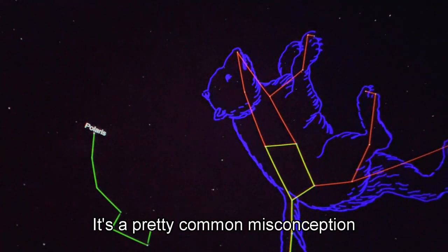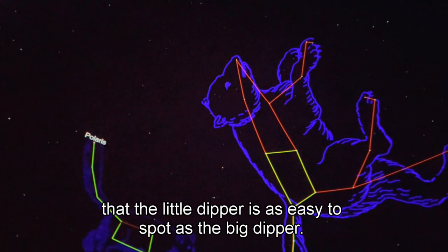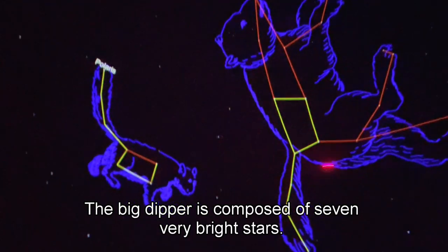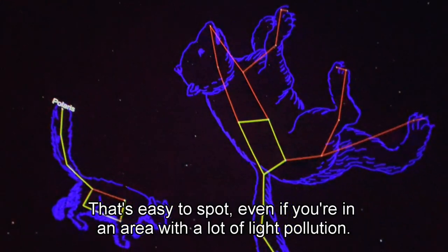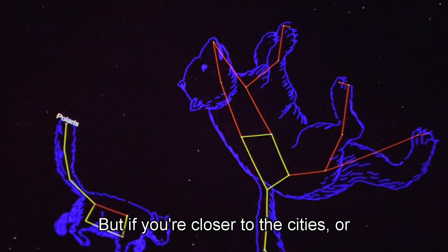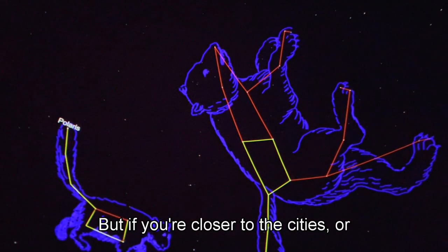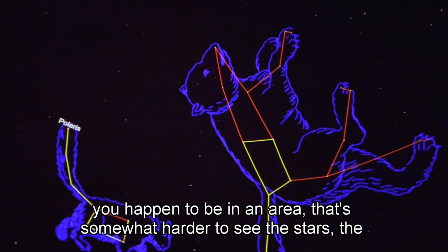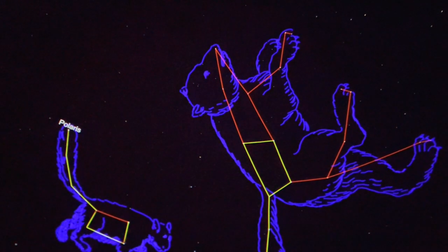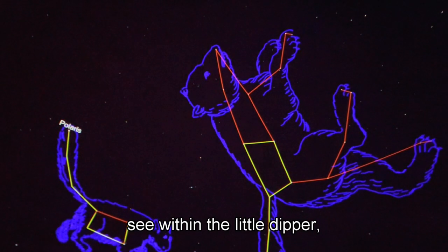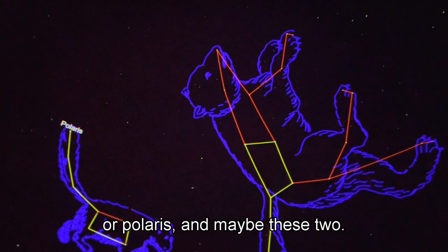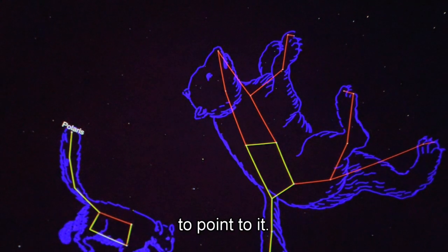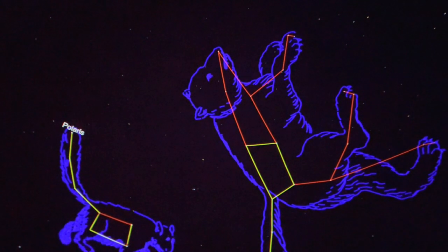It's a pretty common misconception that the little dipper is as easy to spot as the big dipper, but that's really not true. The big dipper is composed of seven very bright stars that's easy to spot even if you're in an area with a lot of light pollution. But if you're closer to the cities or in an area where it's somewhat harder to see the stars, the only stars you're going to be able to see within the little dipper are Polaris and maybe these two. It's a lot harder to find, and that's why you have to use the big dipper to point to it.